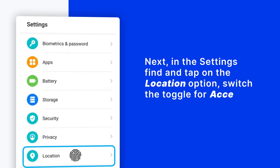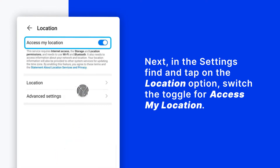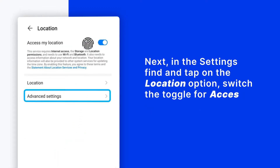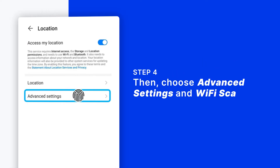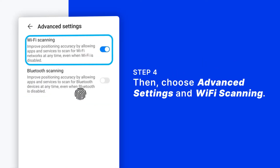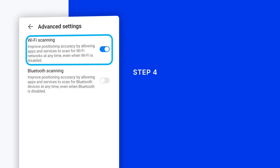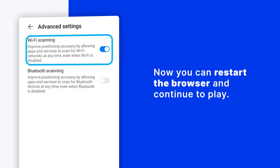Next, in the Settings, find and tap on the Location option. Switch the toggle for Access My Location. Then choose Advanced Settings and Wi-Fi Scanning. Now you can restart the browser and continue to play.